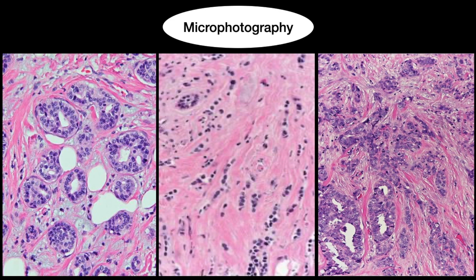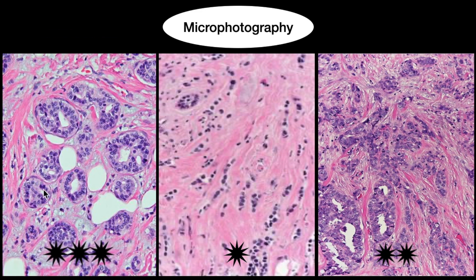Looking at the three pictures on the screen: the picture in the center gets one star — it shows cells and stroma differently but cellular details are not seen well. The picture on the right gets two stars — morphology is better and stroma is nicely seen, but cellular details are still incomplete. The picture on the left gets three stars — morphology is very clear, prominent nucleoli are visible, and the stroma is very well differentiated from the epithelium.